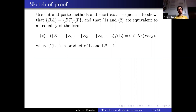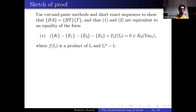Let me briefly sketch the proof. Some elementary computations show the class of BA equals the class of BT times the class of T, so showing BA ≠ 1 is equivalent to showing BT ≠ T^{−1}. Both conditions are equivalent to showing the following cannot be zero: k minus [E1] minus [E2] minus [E3] plus 2 times a monic polynomial in L.